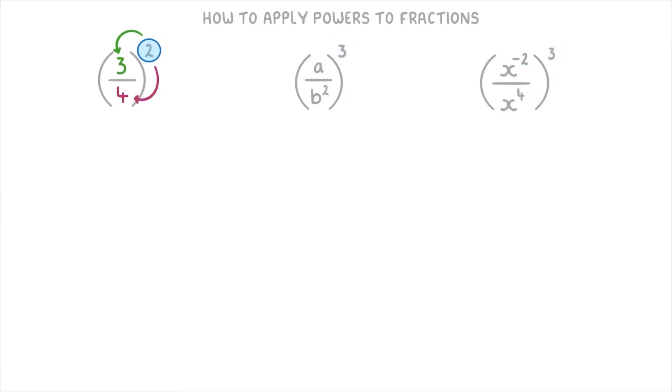So in this first one, where we have 3 over 4, 4 squared, you'd be writing it as 3 squared over 4 squared, which would simplify to 9 over 16.